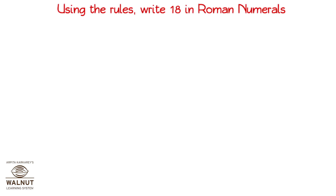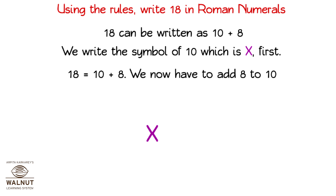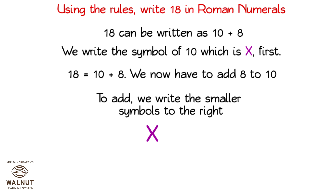Using the rules, write 18 in Roman numerals. 18 can be written as 10 plus 8. We write the symbol of 10, which is X, first. We now have to add 8 to 10. To add, we write the smaller symbols to the right: X, V followed by 3 I's. That is our answer.